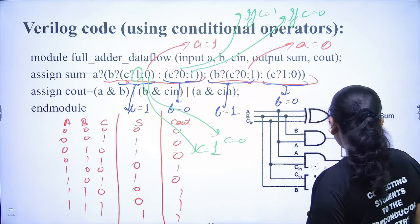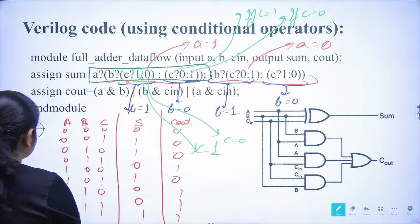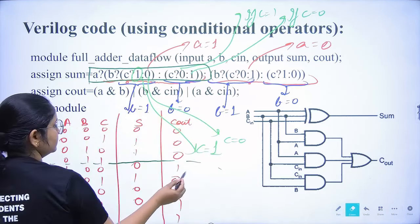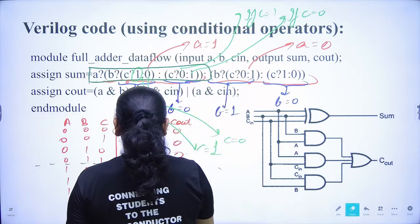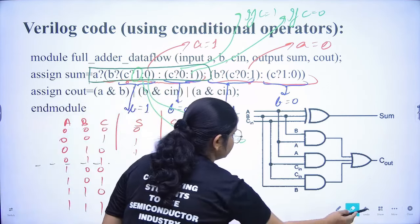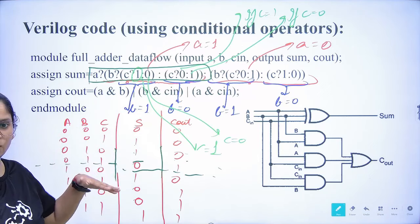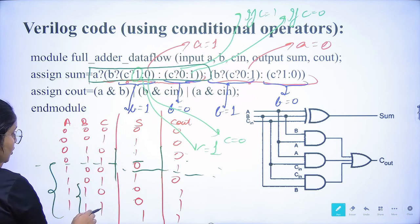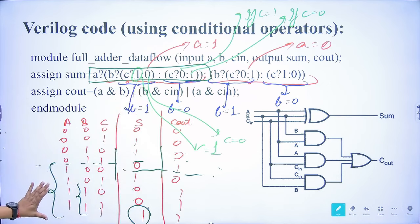When a equals one, all four rows with a=1 are selected. If b equals one, two rows are selected; then if c is one, output is one, and if c is zero, output is zero. If b is zero and c is one, output is zero; if b is zero and c is zero, output is one. This maps exactly to the full adder sum truth table.